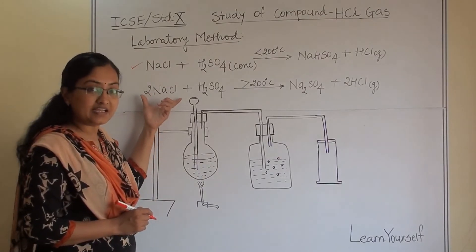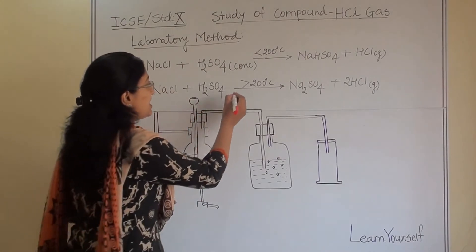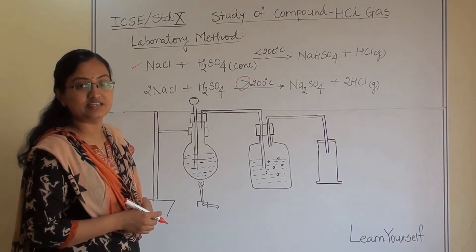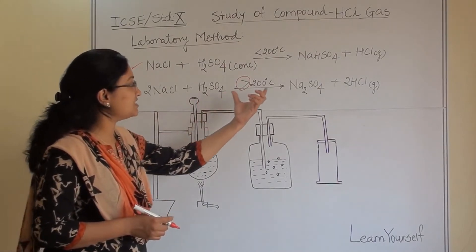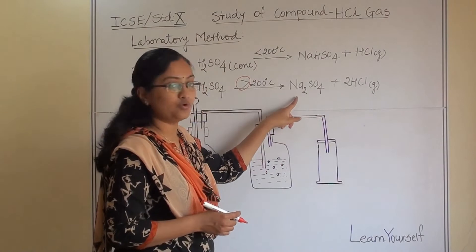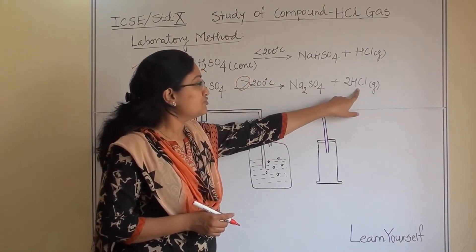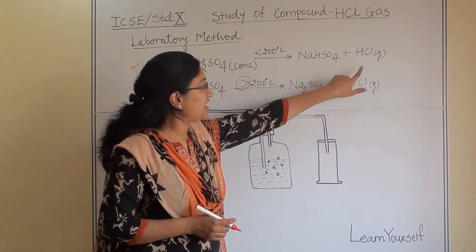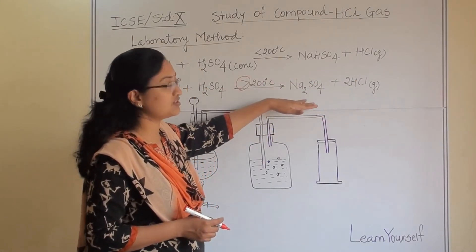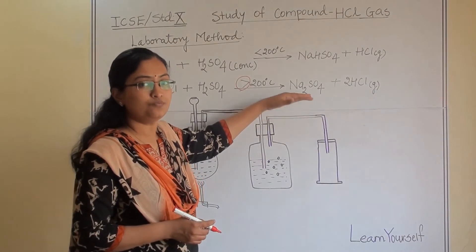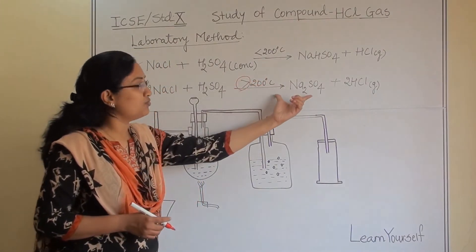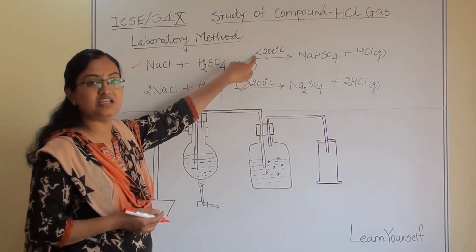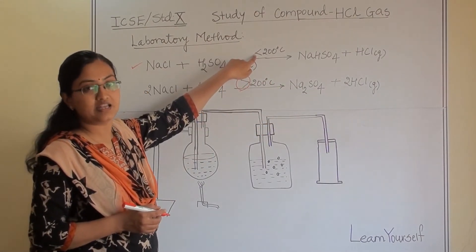In a second equation, if we maintain temperature more than 200°C, then with the same reactants we get sodium sulphate and two molecules of hydrogen chloride gas. Our main product remains the same, but our byproduct changes. We will see later why we maintain temperature less than 200°C.